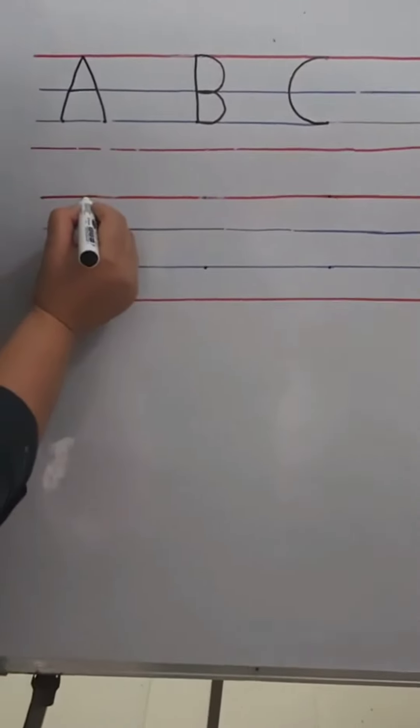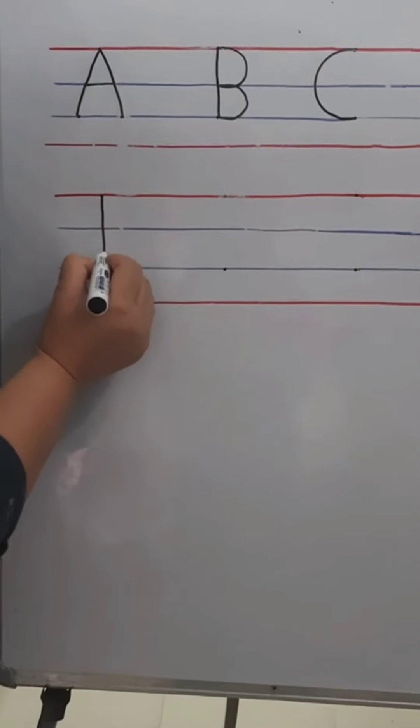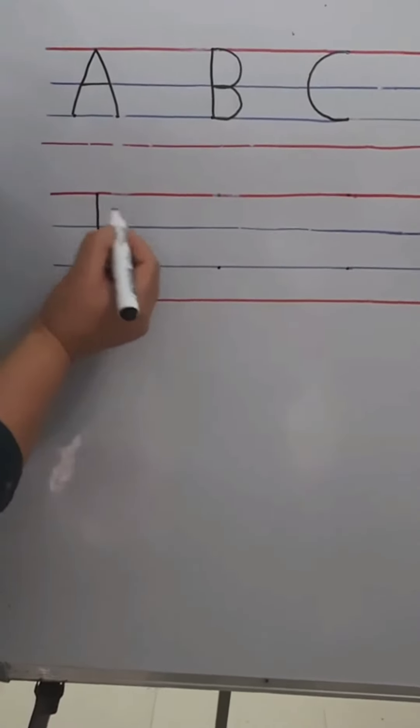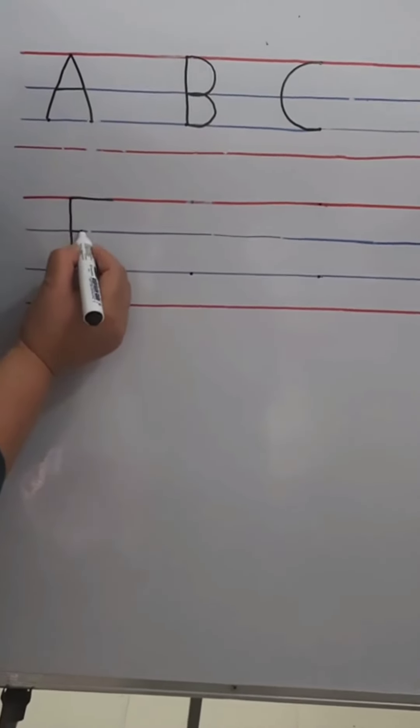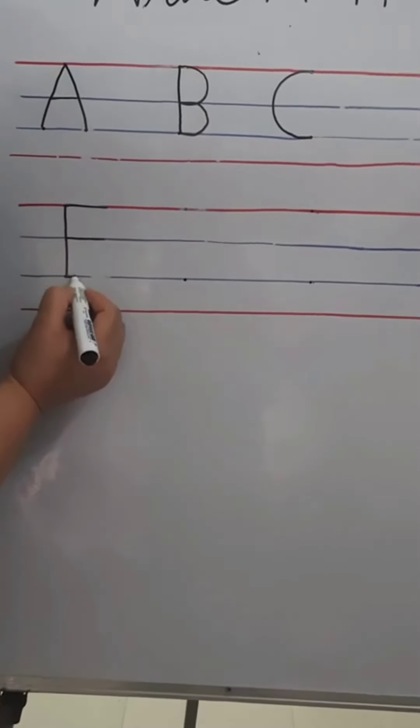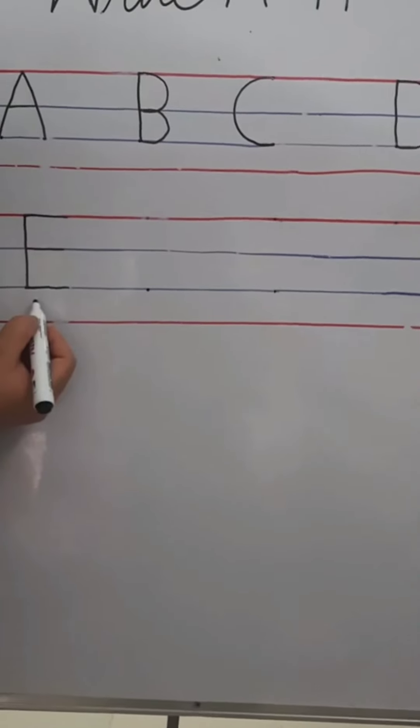For E, again we have to make one standing line. And three sleeping lines. One, two, and three. This is letter E.